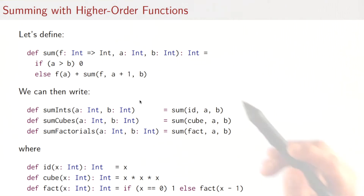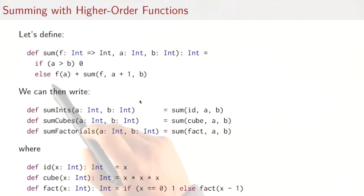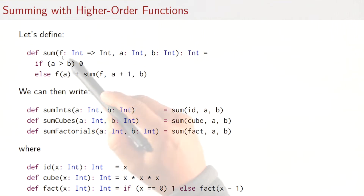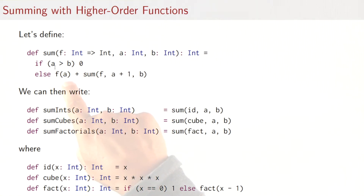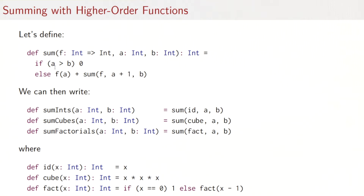Here's how that's done. Let's define a function sum which takes a parameter f of type int to int, and the two bounds a and b, both ints. We generalize the previous three definitions as follows: if a greater than b then zero, otherwise take f of a plus sum of f and a plus one, b. The new thing here is that f is a parameter of the sum function — it's not a given function, it's a parameter.